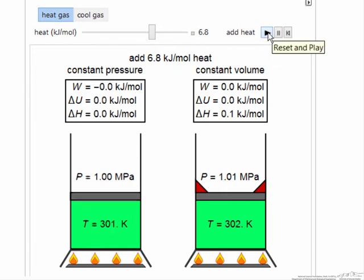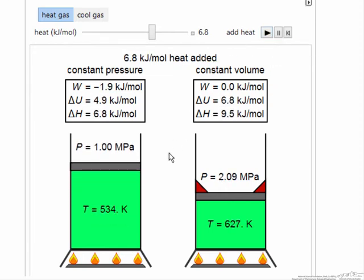So as it goes to its final condition, the pressure is higher here, and therefore the temperature is higher because the same amount of energy went into both systems, 6.9 kilojoules of heat.